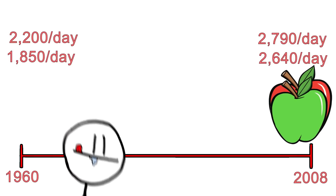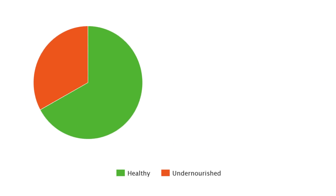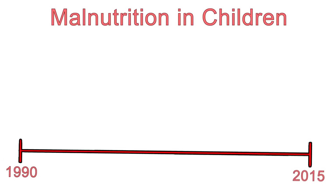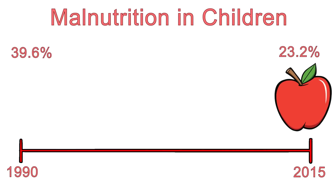This means that yes, the world does in fact produce enough food to feed everyone — it's just a matter of providing that food to affected areas. The number of undernourished people in developing countries has gone down from 34 percent in the mid-1970s to just 15 percent three decades later. Child malnutrition has also decreased significantly: the stunting prevalence of children under five went down from 39.6 percent in 1990 to 23.2 percent in 2015, and that number has been steadily decreasing every year.